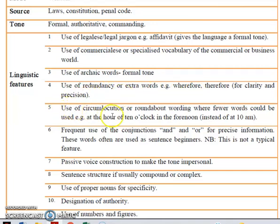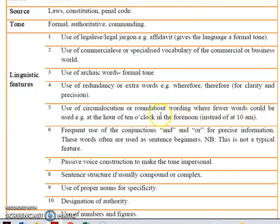The use of circumlocution, or roundabout wording, where fewer words could be used. Example: "at the hour of 10 o'clock in the forenoon." The word forenoon is an archaic word — words that are no longer in use or are obsolete — instead of simply saying "at 10 a.m."